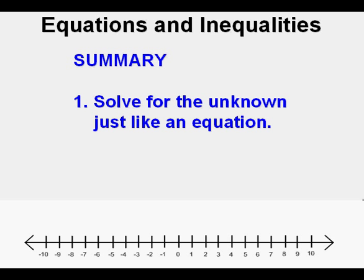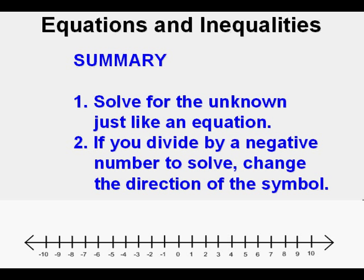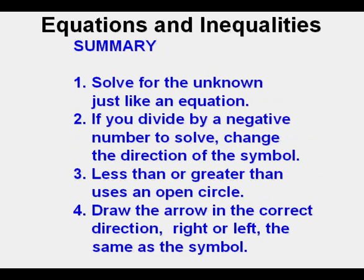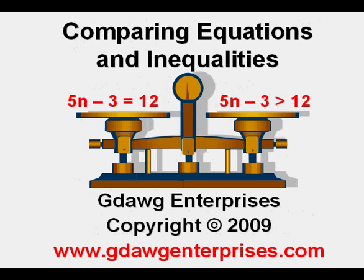Let's summarize — we've covered a lot in this video. We solved inequalities just like equations. If we have to divide by a negative number to solve, we need to change the direction of the symbol. Less than or greater than is graphed as an open circle, while less than or equal to and greater than or equal to use a solid point. We draw the arrow in the correct direction, which matches the direction of the symbol. This has been Comparing Equations and Inequalities — thanks for viewing.